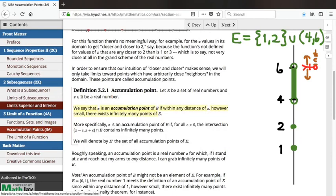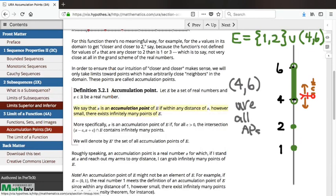So 5.9 is an accumulation point. 5.99 is an accumulation point. 4.001 is an accumulation point. So I think we can convince ourselves that certainly the entire open interval from 4 to 6 consists of accumulation points of E.